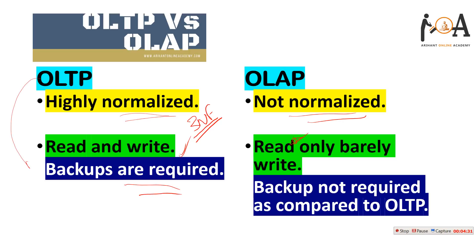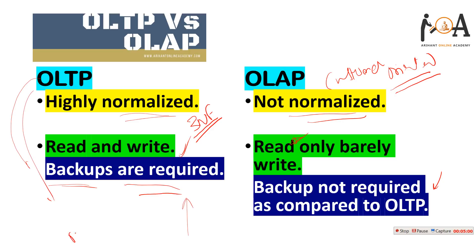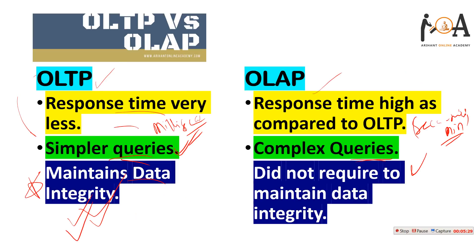In OLTP, backups are required because response time is very important and OLTP is used in a marketing environment, such as the banking sector or online transactions, so incremental backups are needed. If there is a network failure, data integrity must be maintained. In OLAP, such backups are not as necessary. Also, OLAP is customer oriented — we predict and analyze customer needs — while OLTP is market oriented.